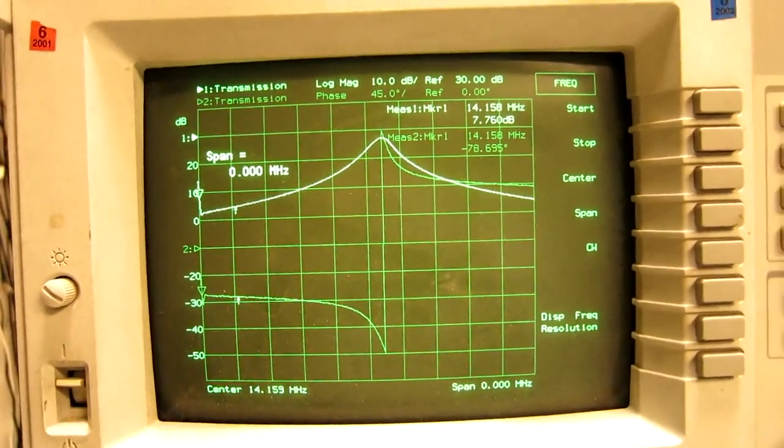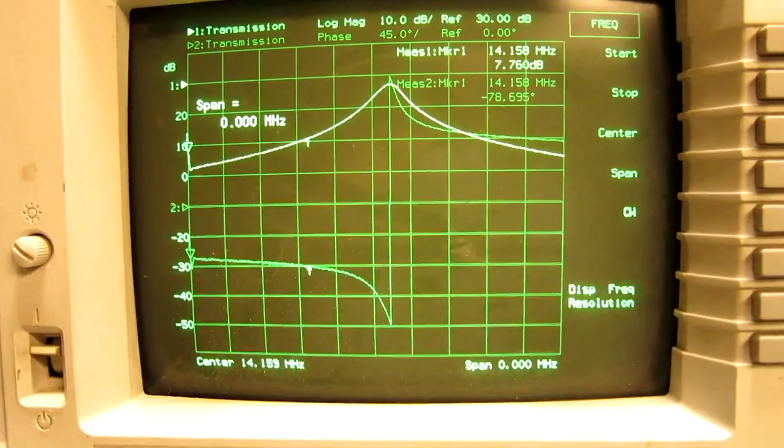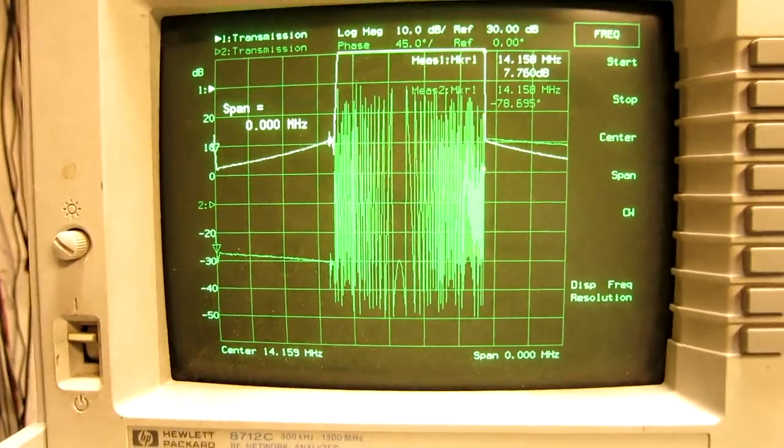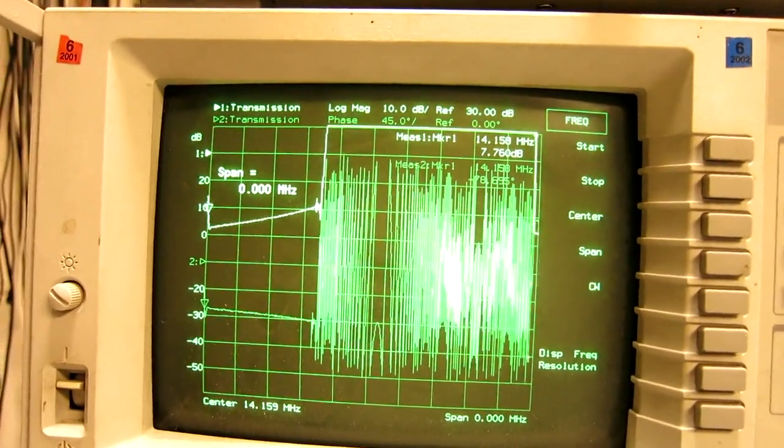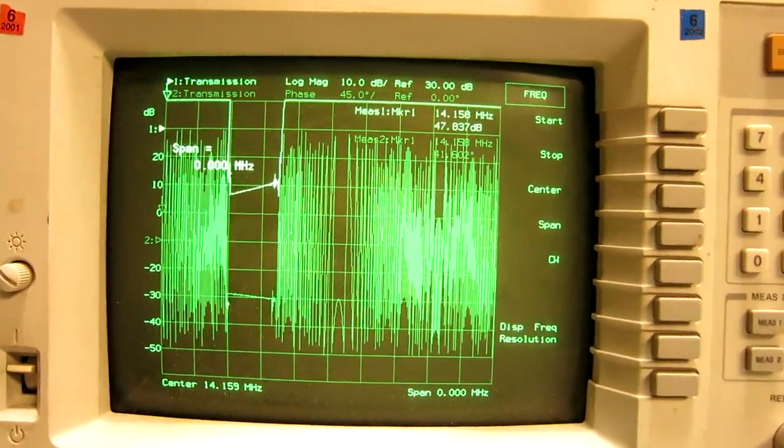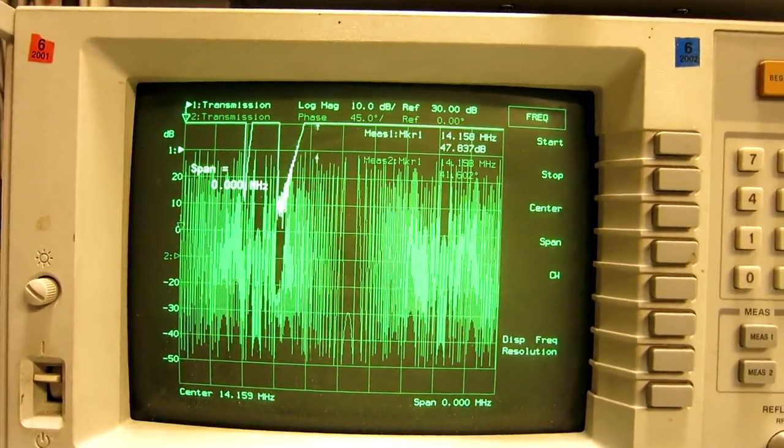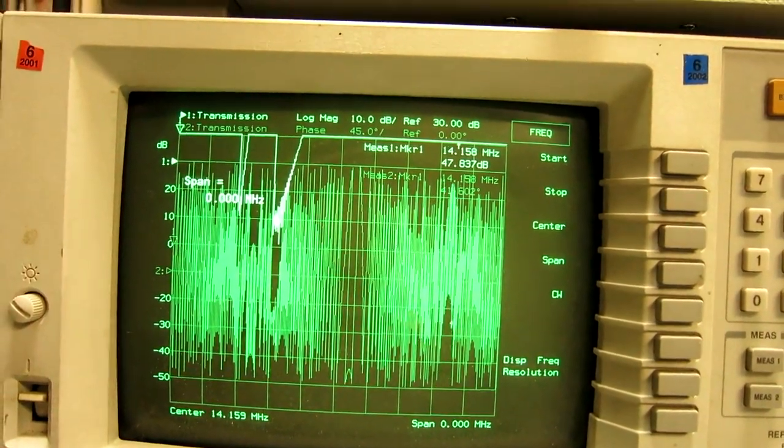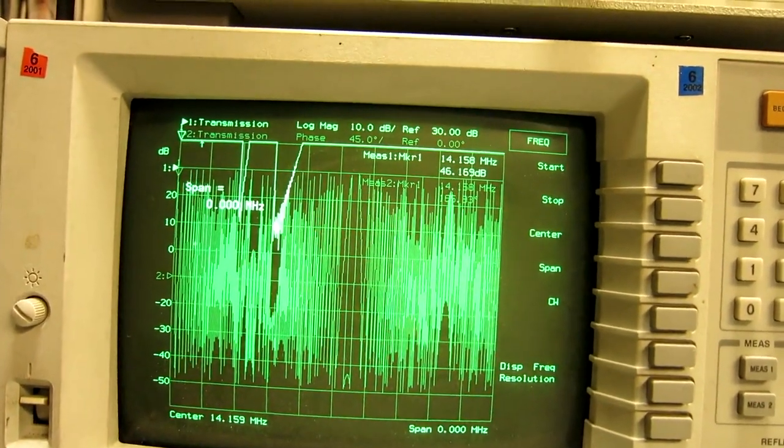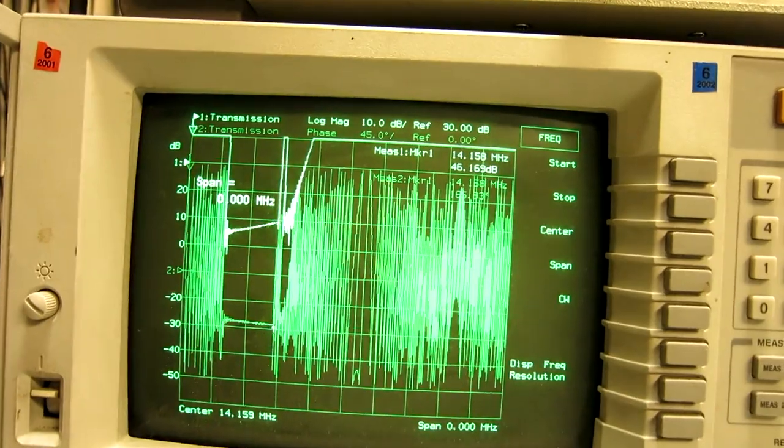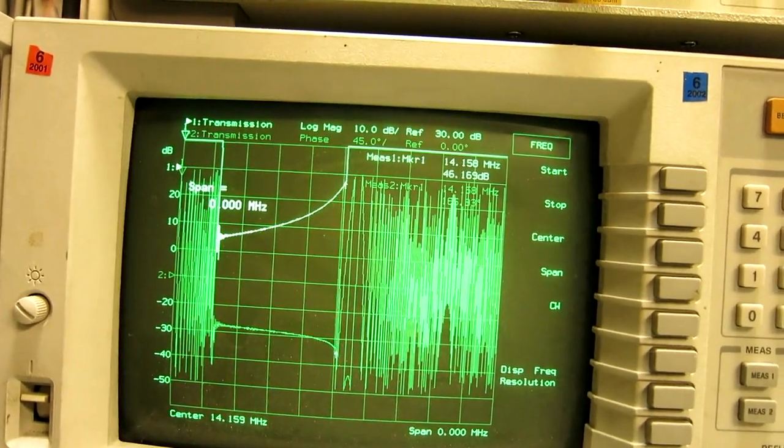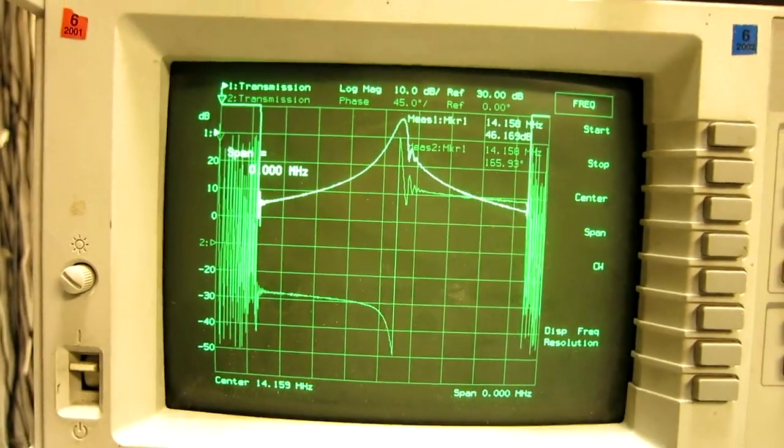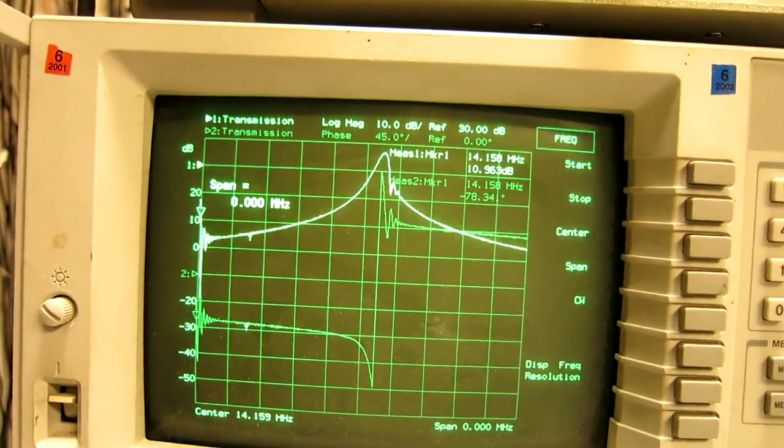Now I can reduce attenuation one more dB. And now it's an oscillator. So I add fractions of a dB - point two, point four, point six. It's still oscillating.